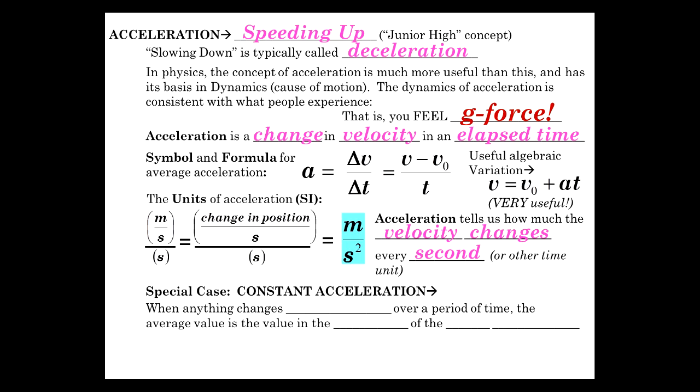Now, a very important special case is constant acceleration. And you can probably recognize that a constant acceleration just simply means that the velocity changes, and it would do so at a constant rate. Anything that changes uniformly over a period of time, the average value is the value that occurs in the middle of the time interval of that particular situation.